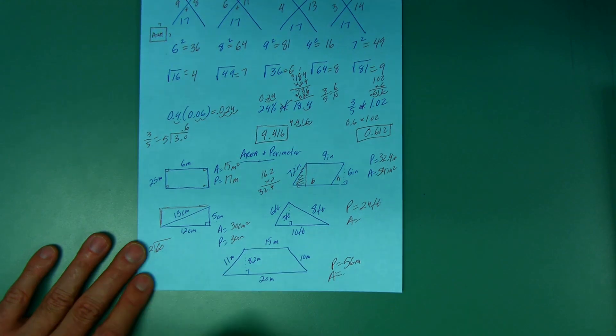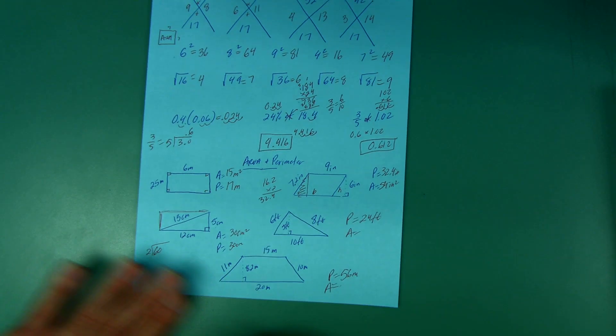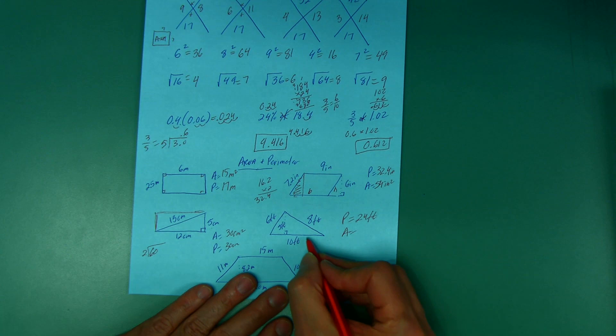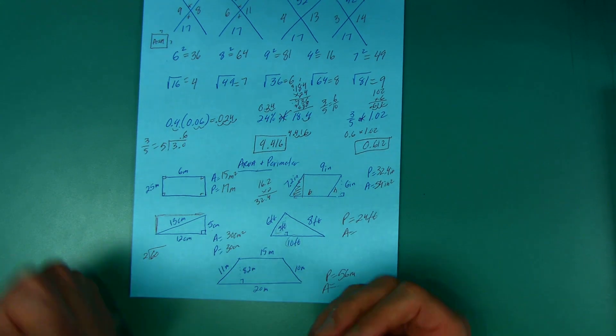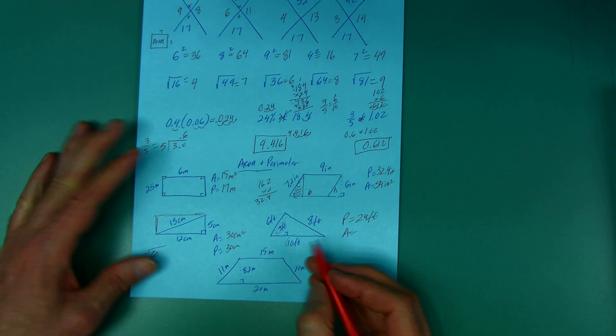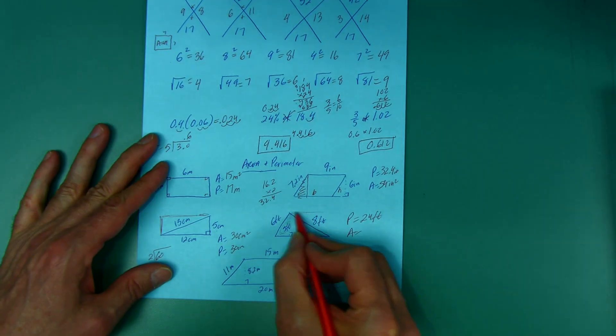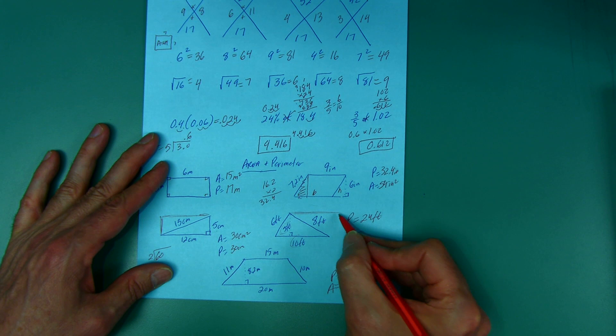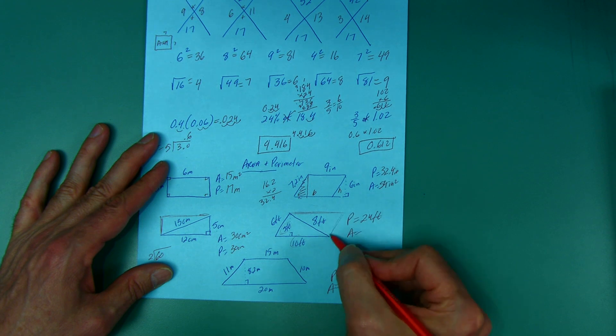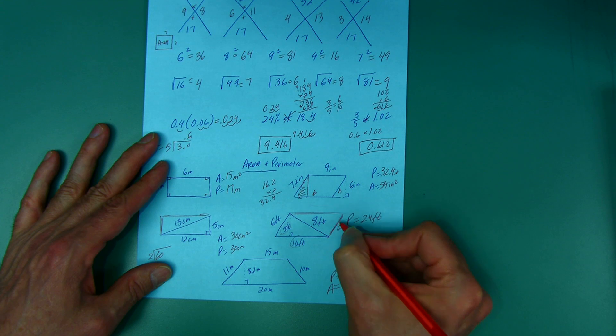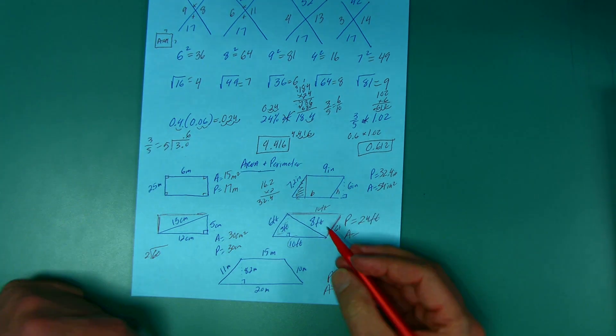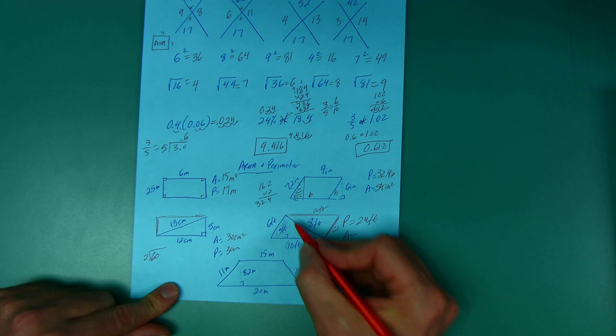All right, again, the area I need to know the base and height. 5 times the 10, but that's going to be double what I need, right? Because that would be if I clone this triangle and put it upside down over here. This would be 6 and this would be 10. I have a parallelogram.